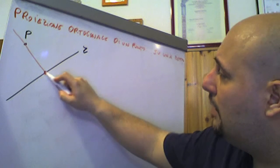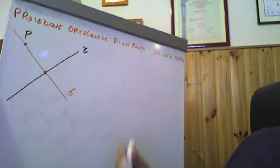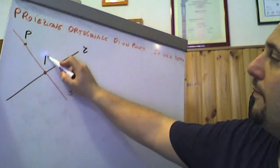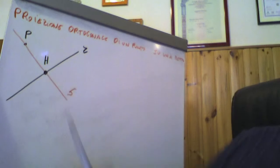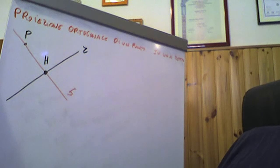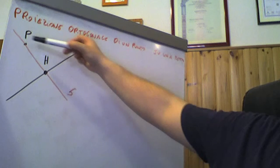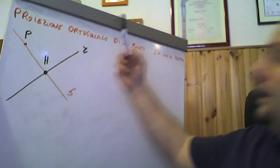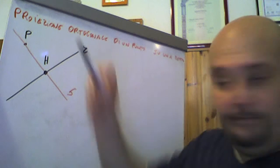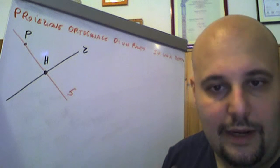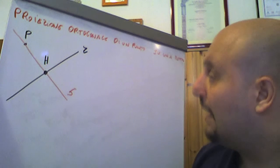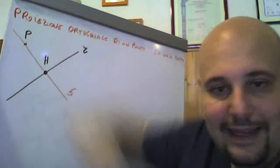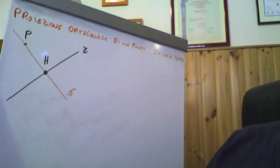Tale retta S notiamo che incontra la retta R in un punto che possiamo indicare con H. Questo punto H è chiamato proiezione ortogonale del punto P sulla retta R. Quindi, la proiezione ortogonale di un punto su una retta è un punto che appartiene sia alla retta R che alla retta S perpendicolare ad R.